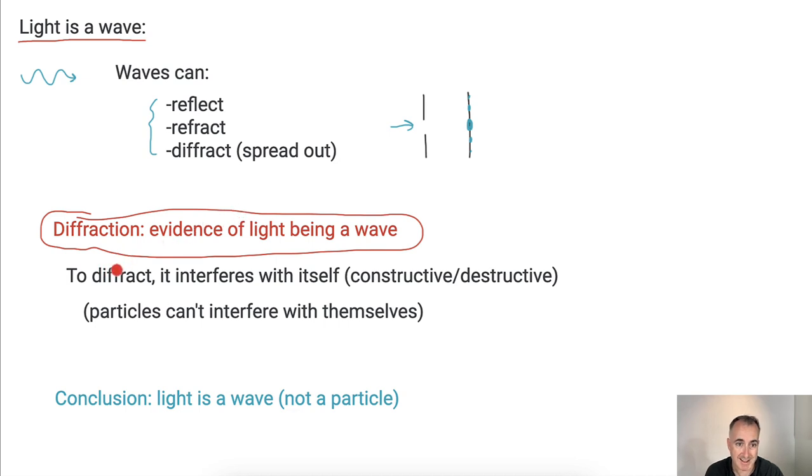Now, to diffract, something has to interfere with itself. You have this constructive and destructive interference. Either they add up or they subtract. That's why you get these bright spots or these dark spots. But particles can't interfere with themselves, so we think. So by the way, it's wrong. But this was the thinking. So particles couldn't interfere with themselves. So that meant, conclusion, that means light must be a wave and can't be a particle.